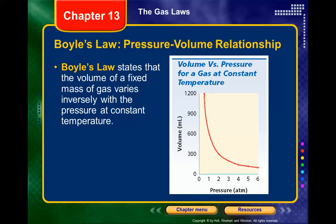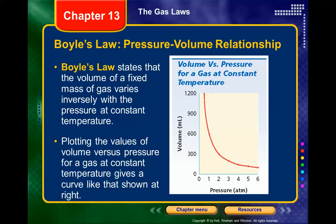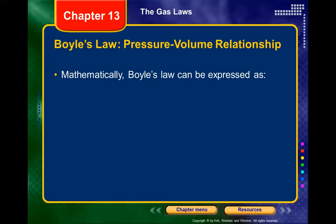The inverse relationship means as pressure goes up volume goes down, and as volume goes up pressure goes down. Plotting those pressure-volume values gives the curve we see here. Mathematically, Boyle's law is: pressure times volume equals a constant.